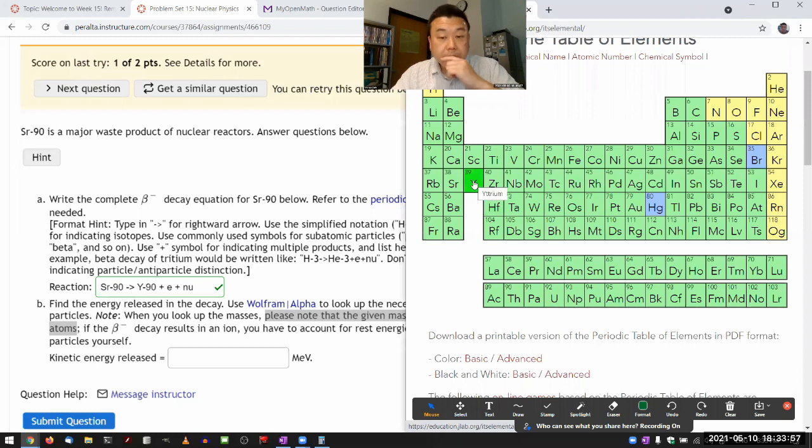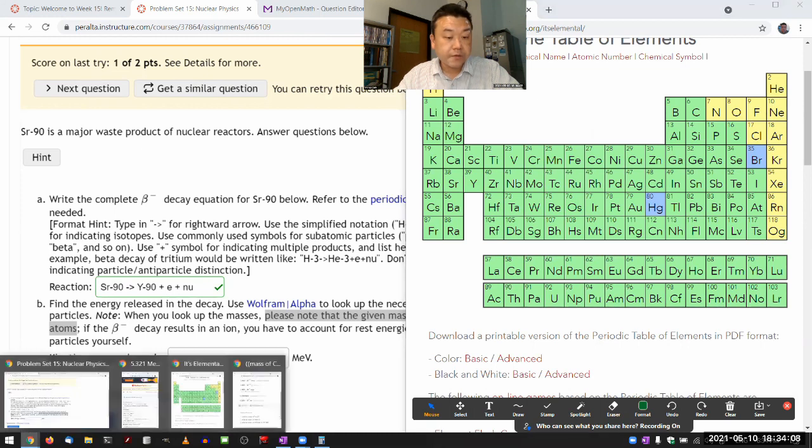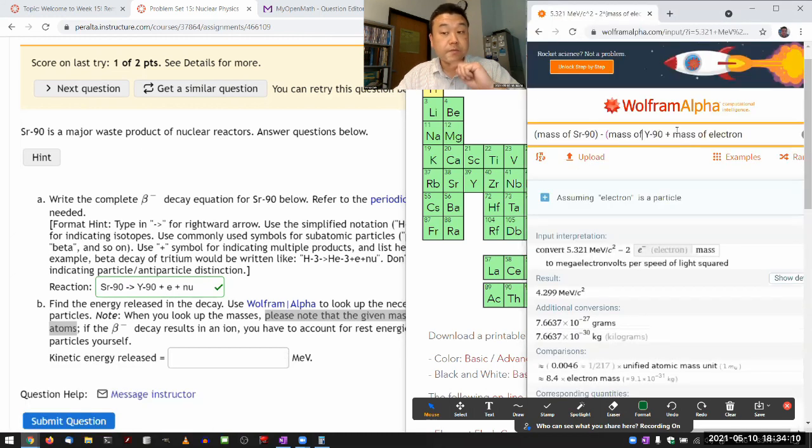So, oh, wait, wait, wait, I need to subtract. So whenever I say mass of strontium, that includes the 38 electrons. When I say yttrium, it includes the mass of 39 electrons. So I need to actually subtract one mass of electron. And for the beta particle electron, I need to add a mass of electron. So those two things are going to cancel out. I can leave that in. It's fine. Wolfram Alpha will do the cancellation for me.